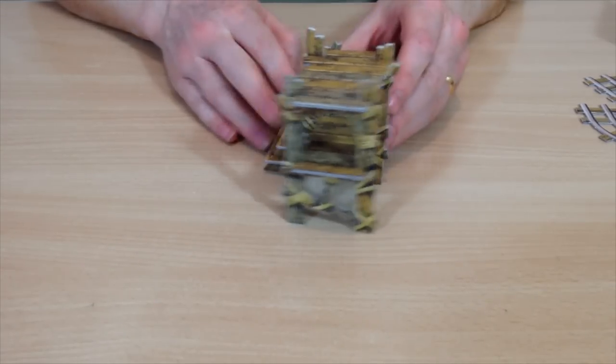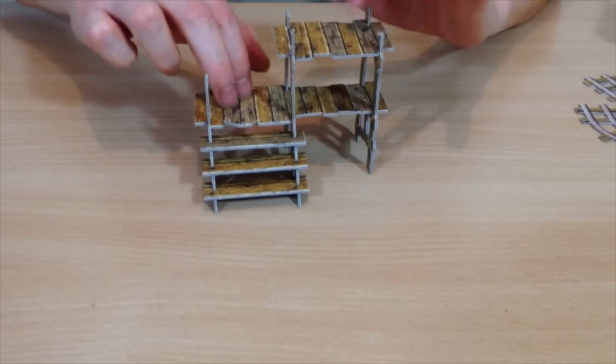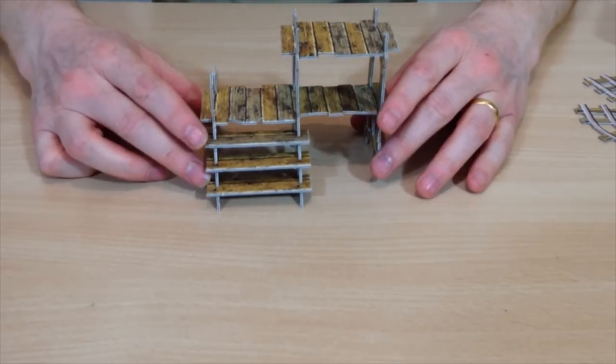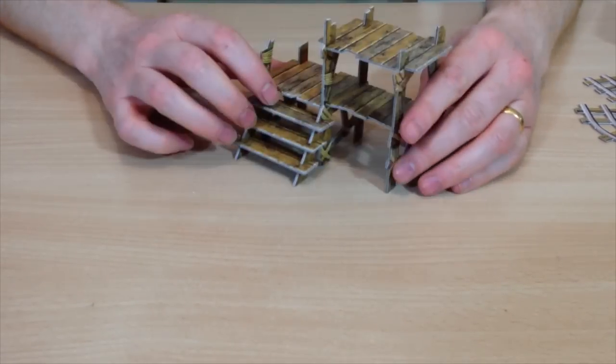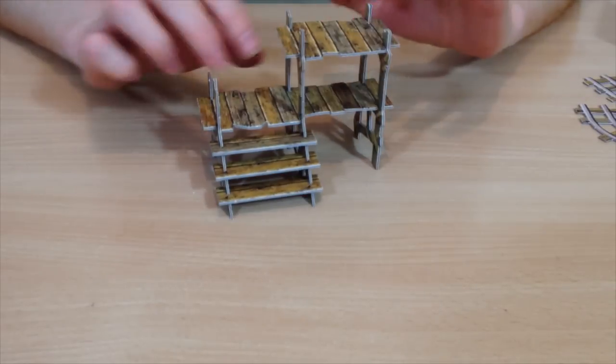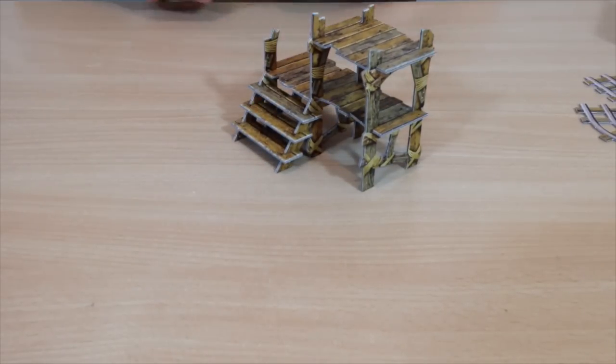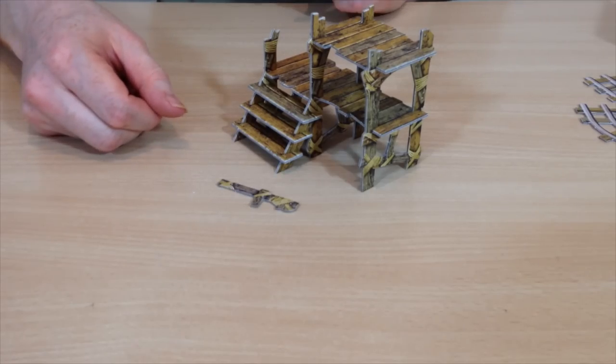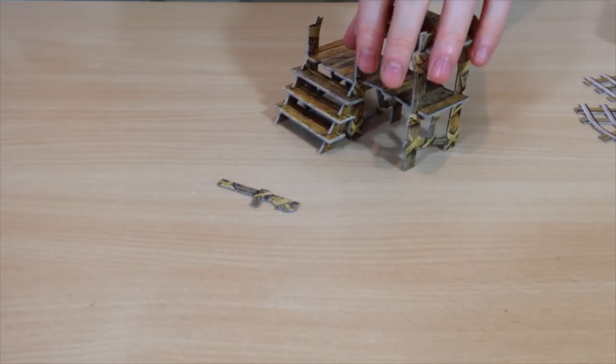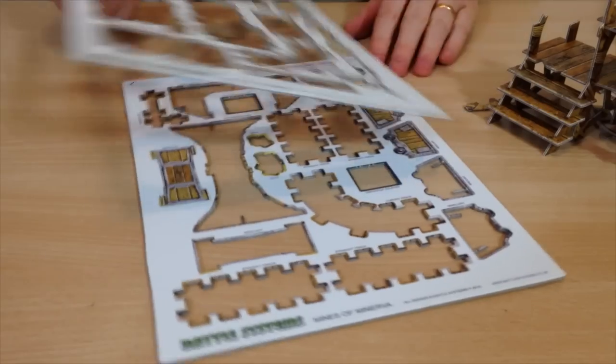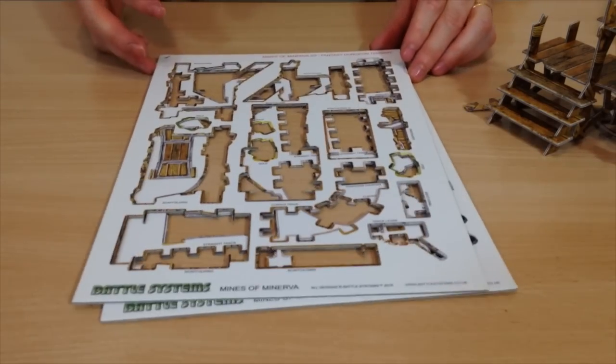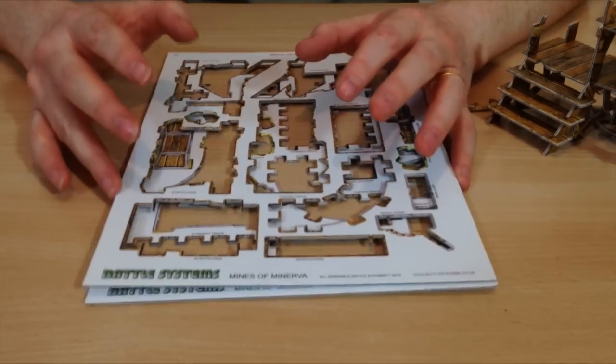And they're staying quite nicely. Yeah, now that gives it a little bit more rigidity, I know that's not a word, I used that in the last assembly videos as well. So there you go, beautiful bit of scaffolding, and a bit of scatter brings it all to life. Yeah, there we go. That, or those, are the sheets for the Mines of Minerva.